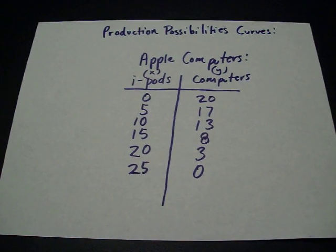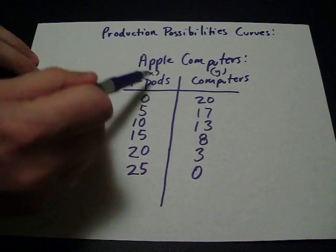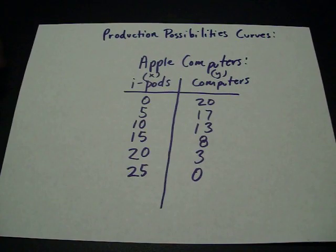So this is just sort of like an economic model and economic math. So I've got the two products, iPods here which I've called product X, computers here which I've called product Y.